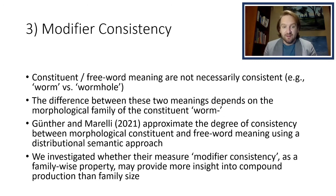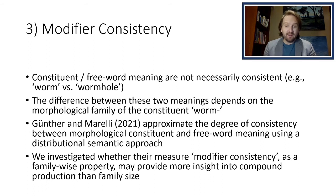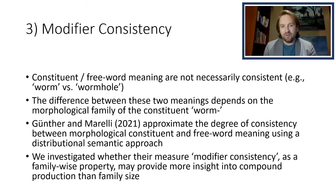Next, we'll look at modifier consistency, a term coined by Gunter and Morelli in 2021. Constituents and their free word meanings don't always necessarily have the same meaning. If we look at the free word worm and compare it to the constituent worm as it appears in wormhole or other compounds, we see that they're quite different. The difference between these two meanings depends entirely on the morphological family of that constituent. Gunter and Morelli approximate the degree of consistency between the constituent and the whole word using a distributional semantic approach, and we investigate whether their measure of modifier consistency as a family-wise property may provide more insight into compound production than family size.